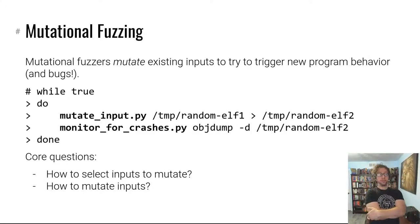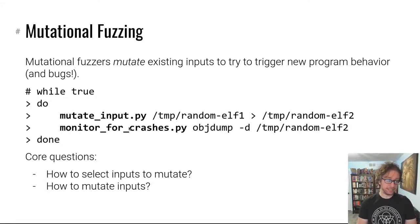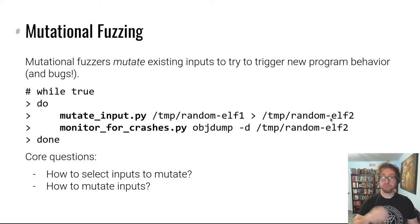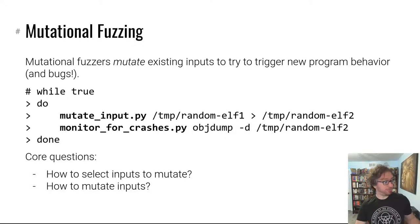This brings us to the modern day: mutational fuzzing. Mutational fuzzing is a different class from generational fuzzing — mutational fuzzers mutate existing inputs to try to trigger new bugs and new code. It's a loop where you pick some random input you've tried before, change it — flip a bit, rotate it, splice it with other inputs — and then try that to see if the program crashes.